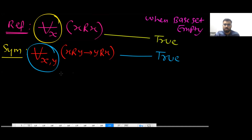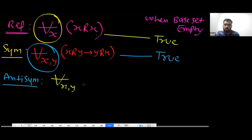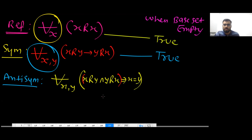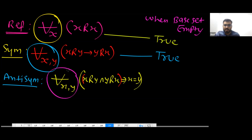What is the definition of anti-symmetric? That is: for all X, Y — if X is related to Y and Y is related to X, then X equals Y. This is also a universally quantified statement. So when the base set is empty, this is also true.